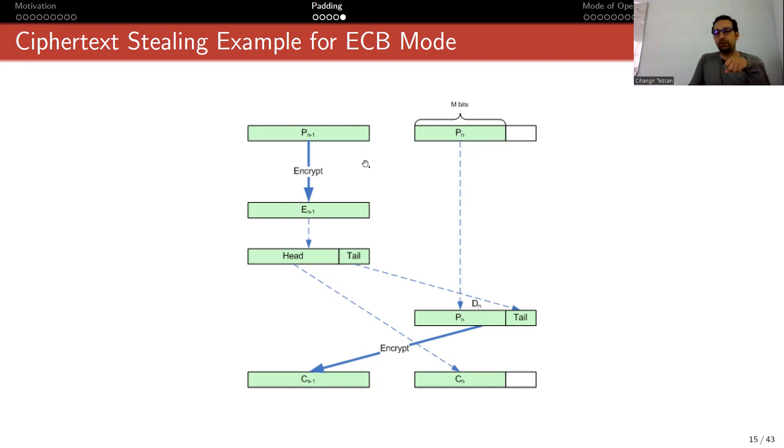Okay, the idea is as follows: encrypt this previous block as usual, obtain the ciphertext block. Then just by looking at the empty size of this empty part, for this encrypted block, divide it as head and tail, where the size of tail is the size of this empty part. What you do is as follows: you take this unencrypted part, take the tail, add to the end, encrypt this whole thing and write it here, and take this head and put it here.